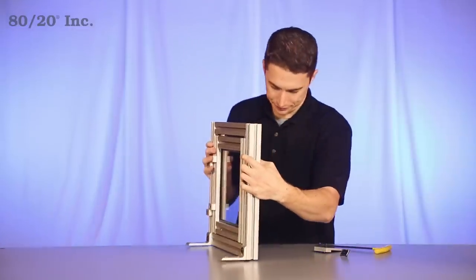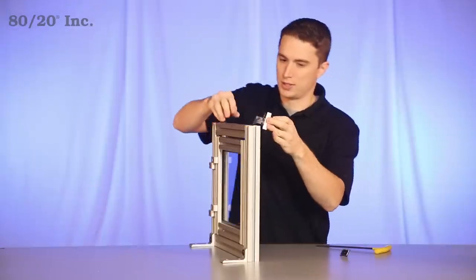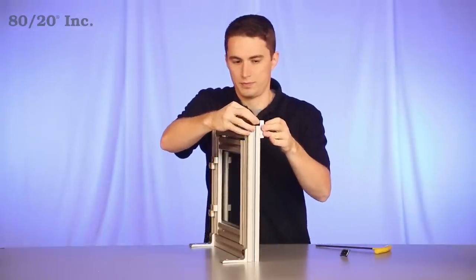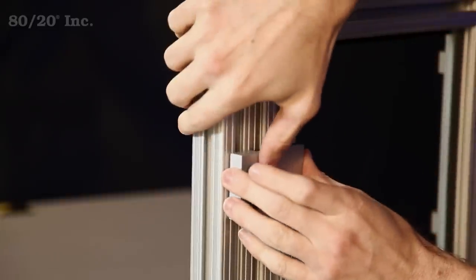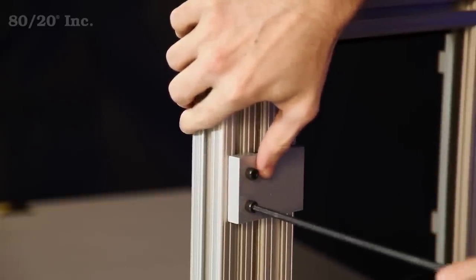Now we'll get our frame into place and slide the body right into the open T-slot. Get that into position, then take the wrench and tighten down the bolts.